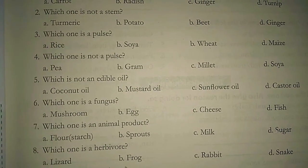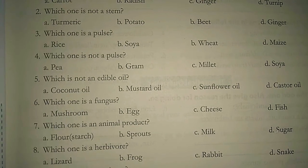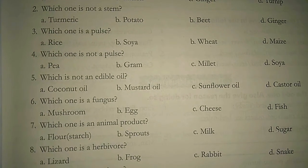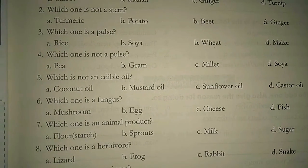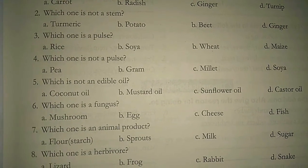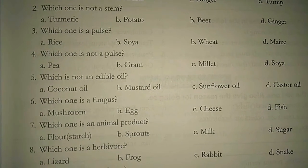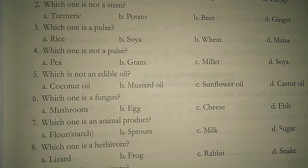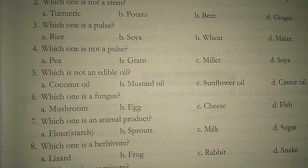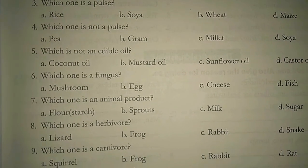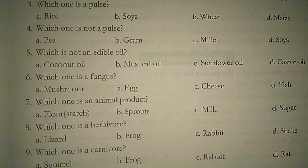Question number five: which is not an edible oil? Options are coconut oil, mustard oil, sunflower oil, and castor oil. Question number six: which one is a fungus? Options are mushroom, egg, cheese, and fish. Question number seven: which one is an animal product? Options are flour, sprouts, milk, and sugar.